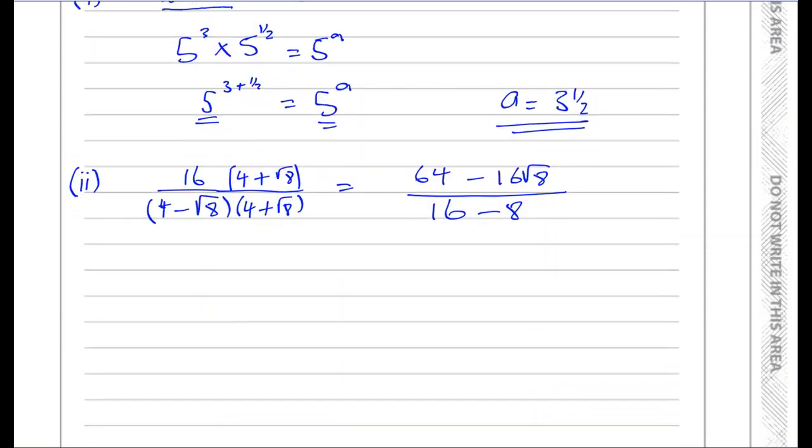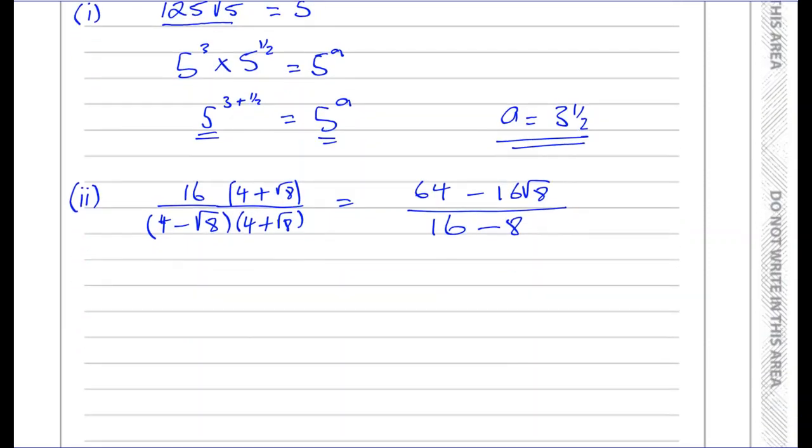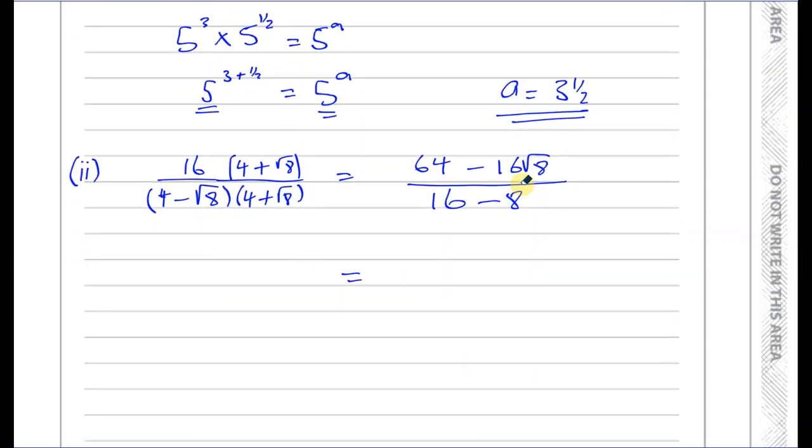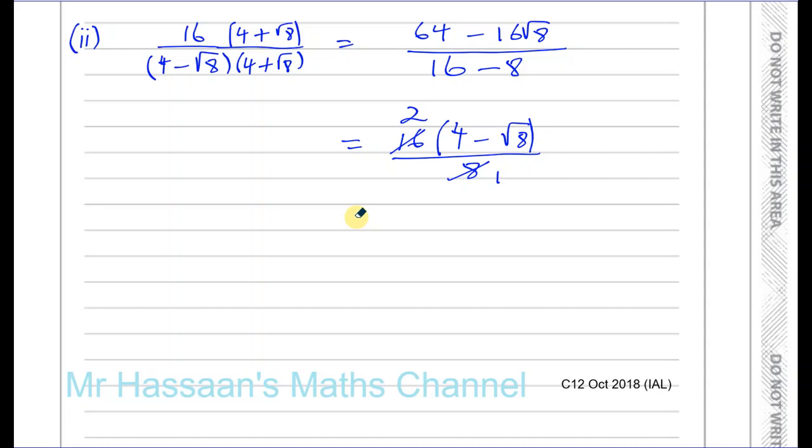Now we can try to simplify this. So let's simplify this by doing a couple of things. Let's take out a common factor on the numerator, which is 16. We've got 16 times four minus root eight. And underneath, you've got 16 minus eight is eight. And here, eight and the 16 cancel out, leaving it with two on top and one underneath. So now we don't have a fraction. We've just got this on the numerator. So we've got two times four is eight, and two times root eight is minus two root eight.